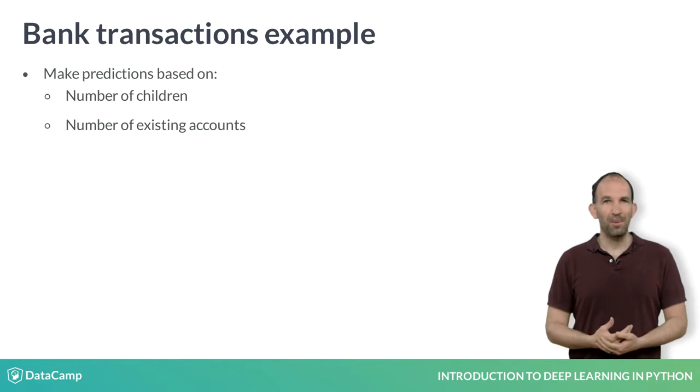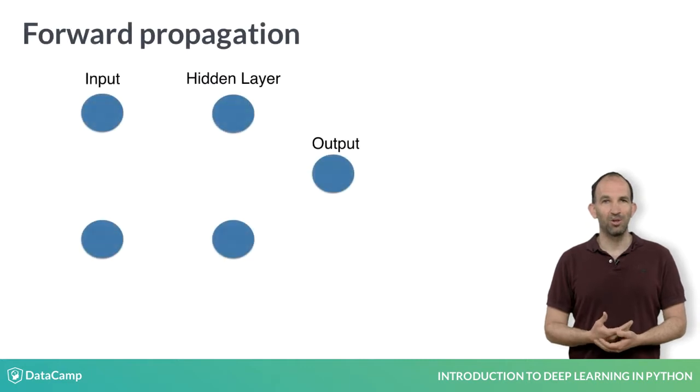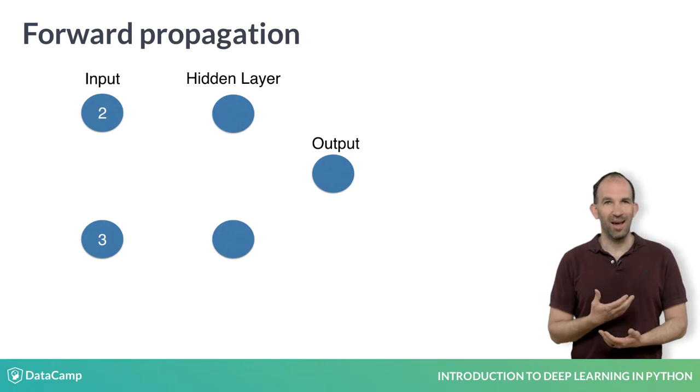For simplicity, we'll make predictions based on only the number of children and the number of existing accounts. This graph shows a customer with two children and three accounts. The forward propagation algorithm will pass this information through the network to make a prediction in the output layer.